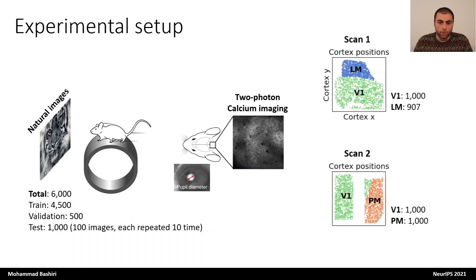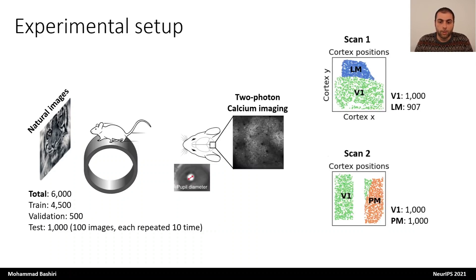In this project we used two such recordings, which I would refer to as scan 1 and scan 2, and here you see a plot of the cortical position of recorded neurons. Each scan has two areas, and per area we use around 1,000 neurons.